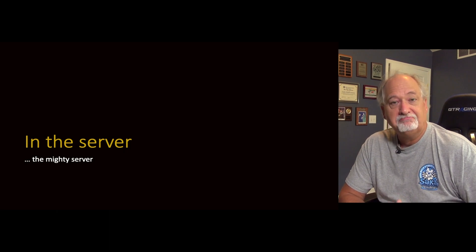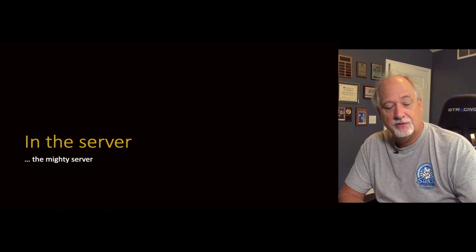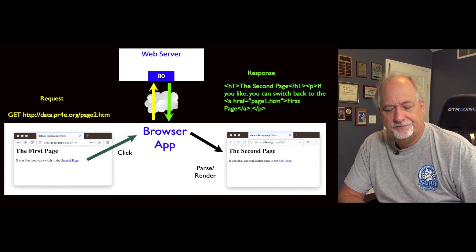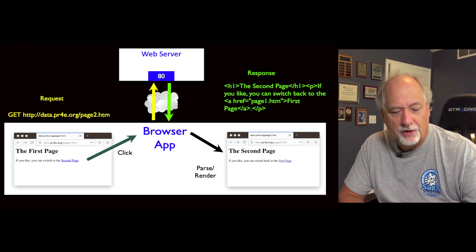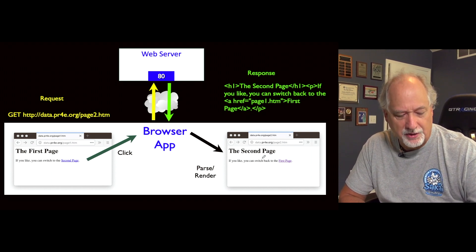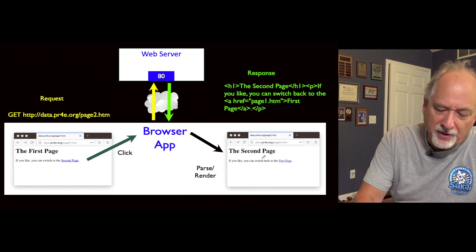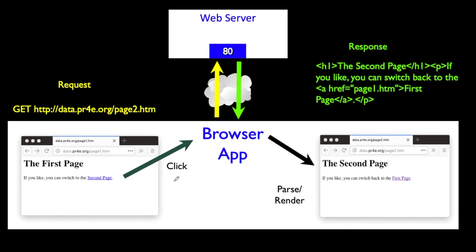We built a browser in Python. Now it's time to build a web server in Python. Remember, the browser is an application — we made it a Python application that sends a GET request. We've effectively built the world's simplest browser. That browser sends a GET request, the server does something, and then it sends the response back.